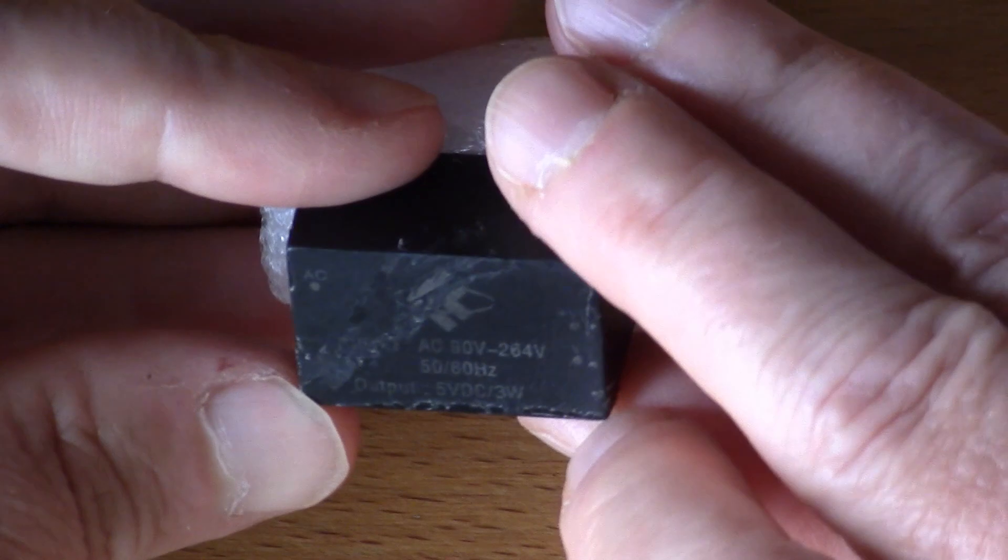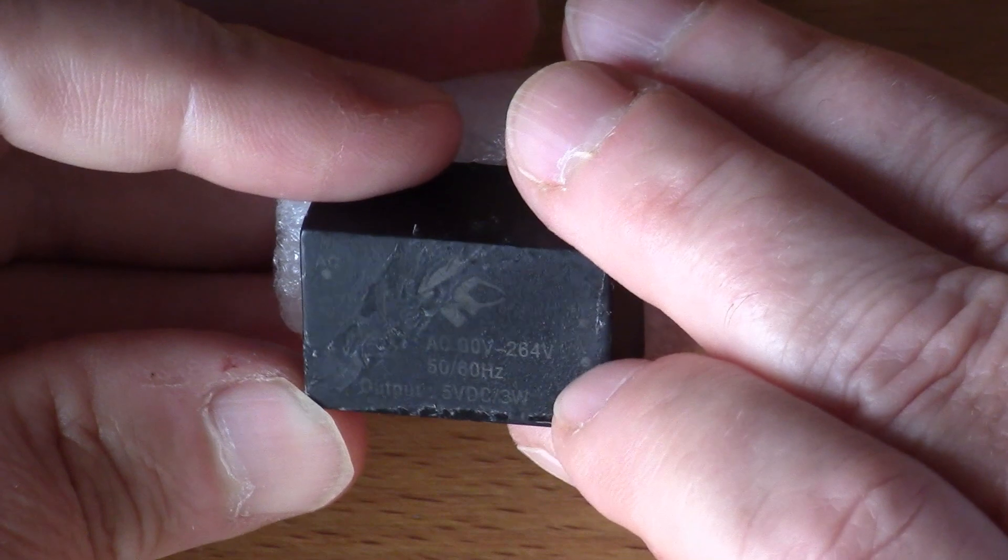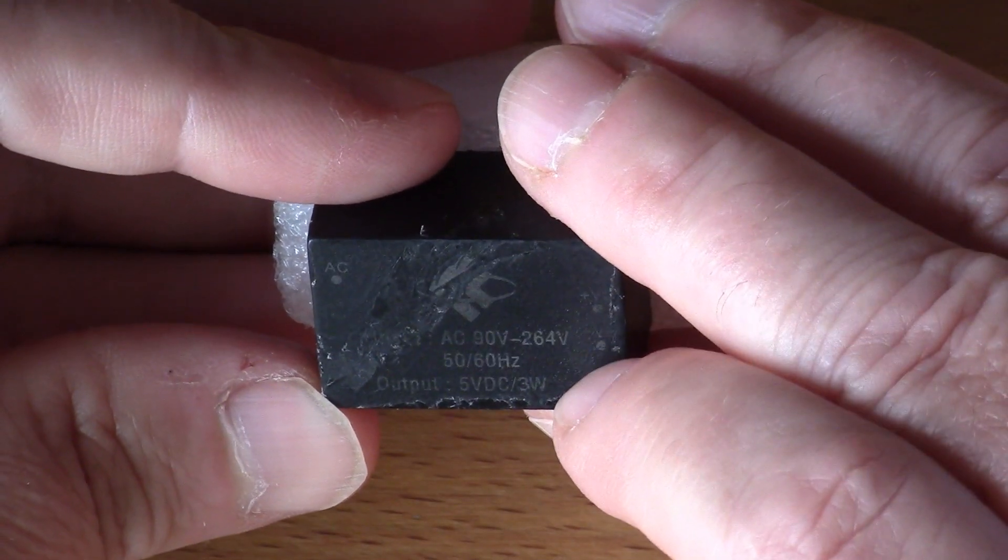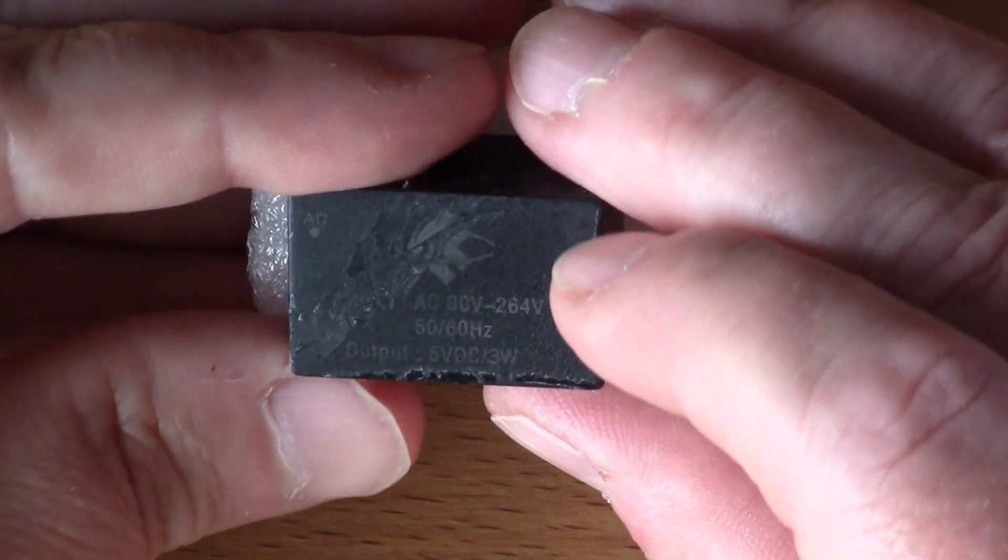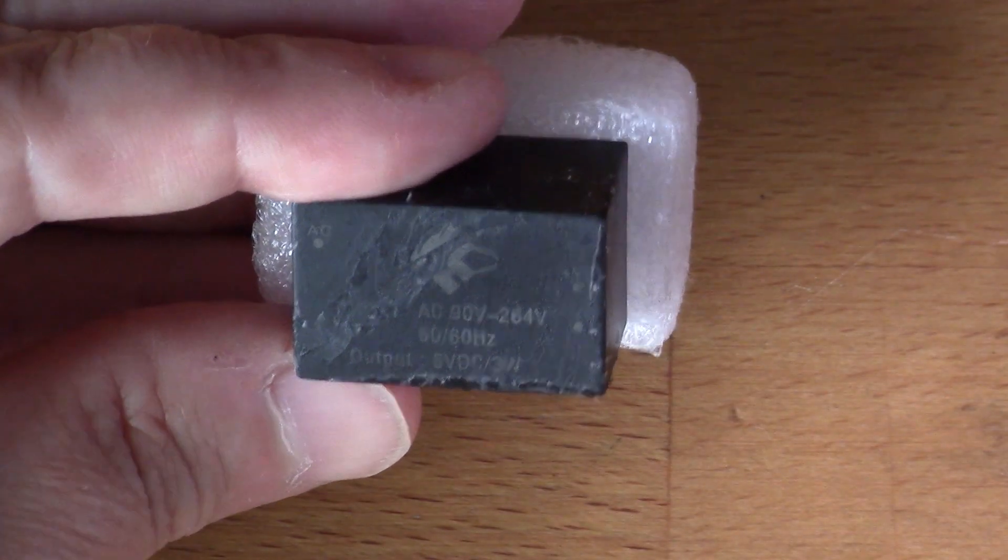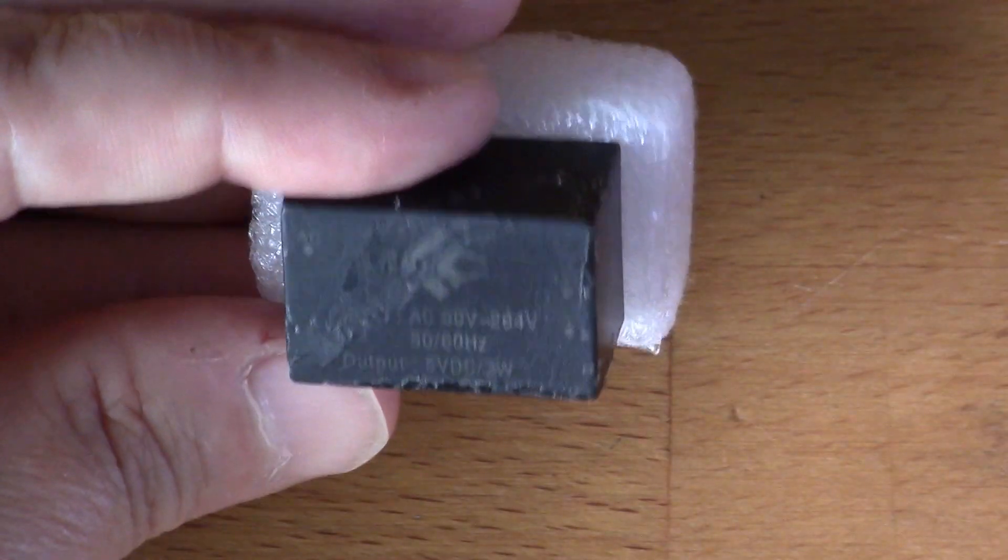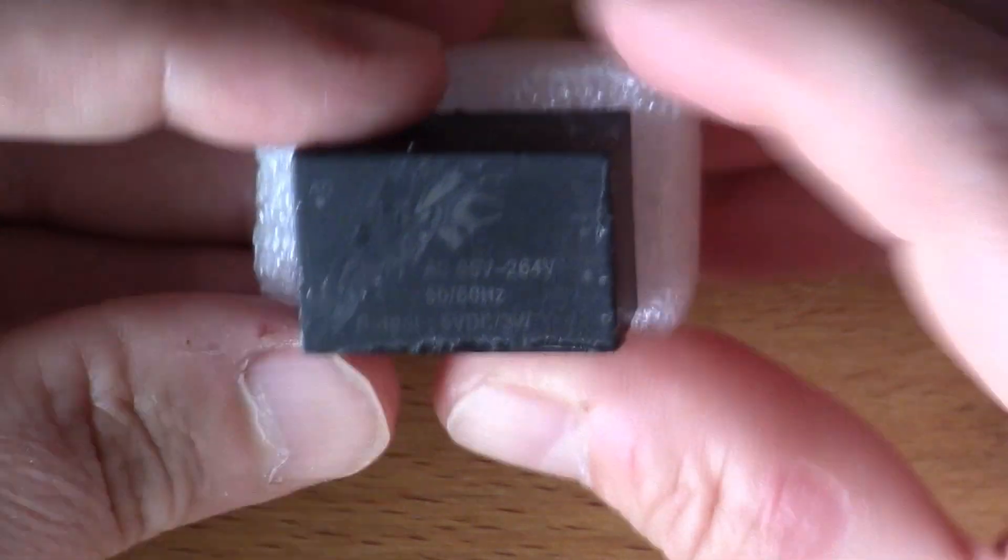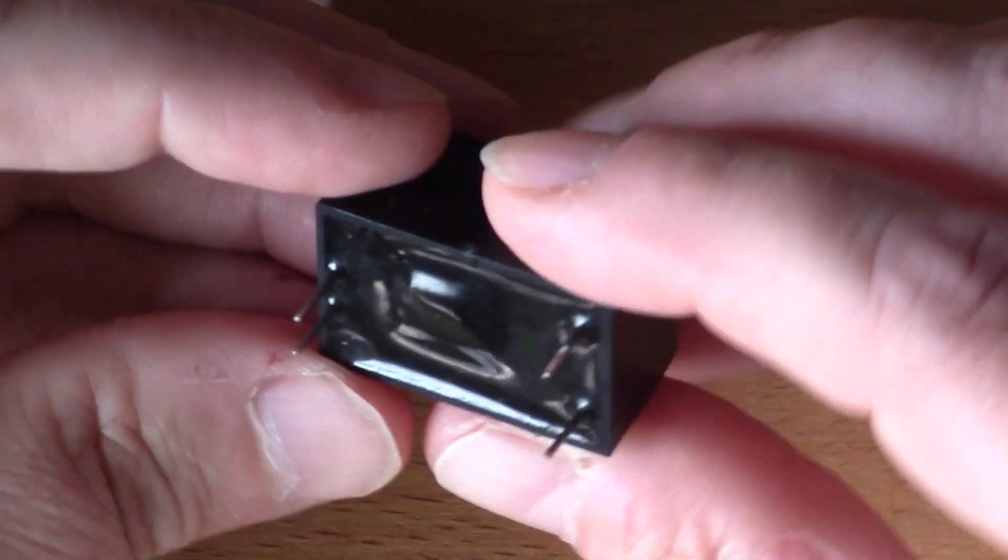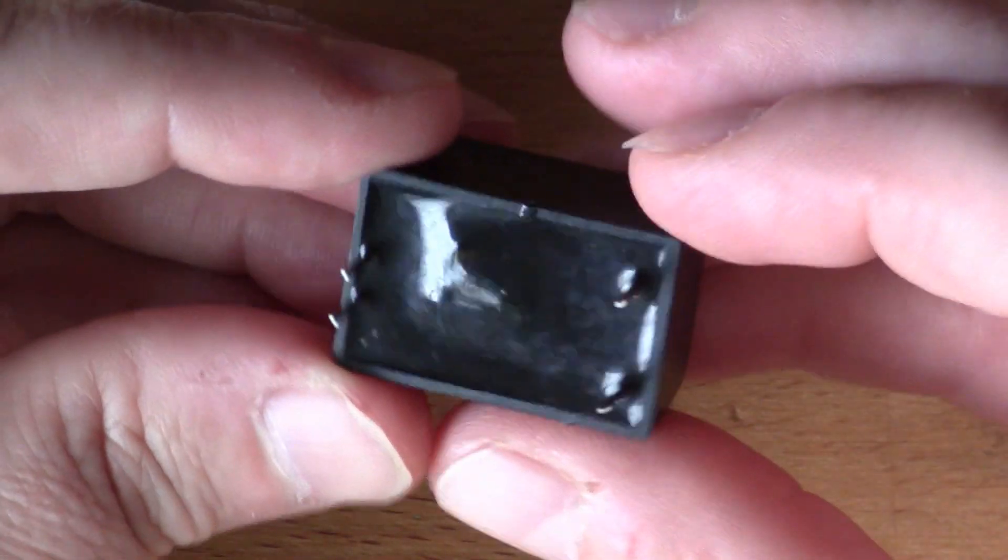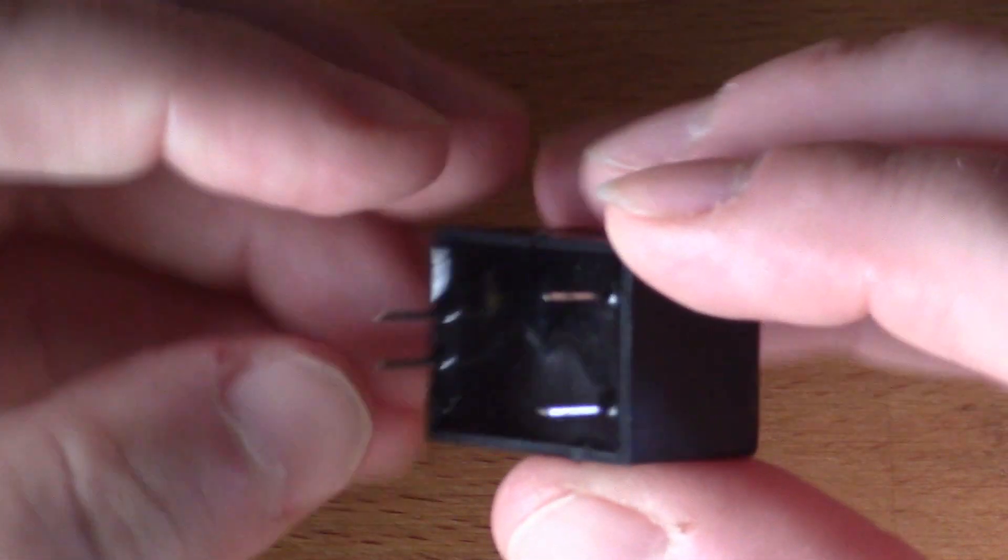On the legend here it says AC 90 volts to 264 volts output 5 volt DC. So you've got the AC side here and then you have the DC output here. If I turn it over you can see it's a completely potted in device with just the AC pins here and the DC out.